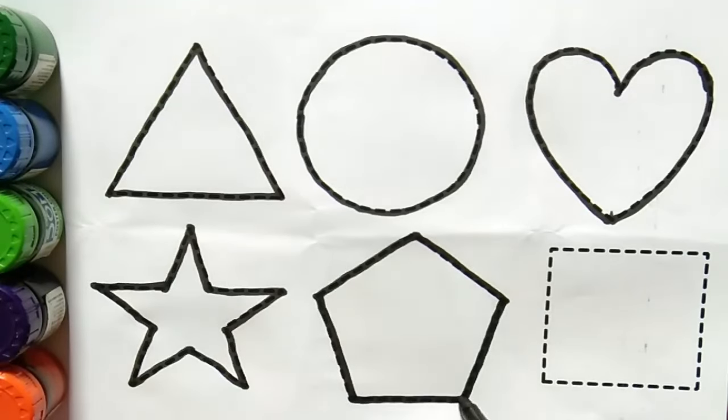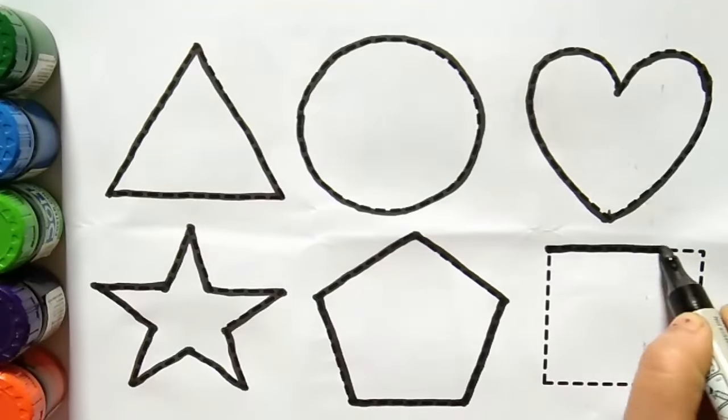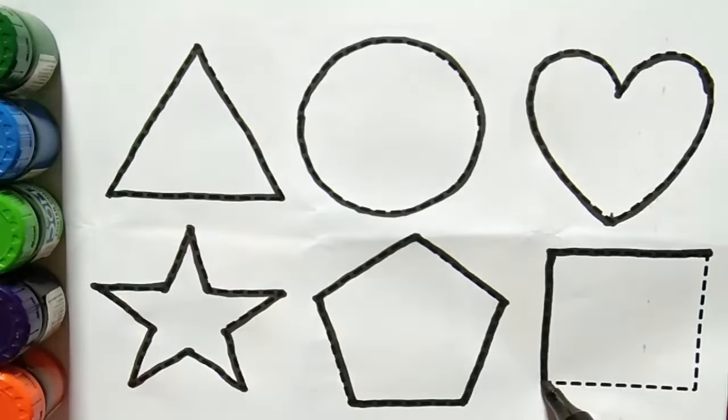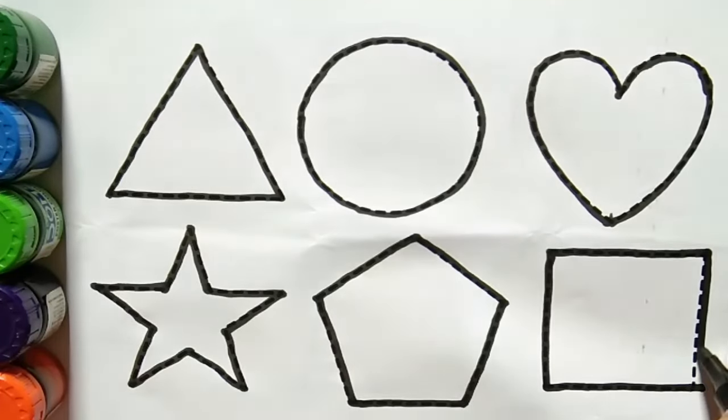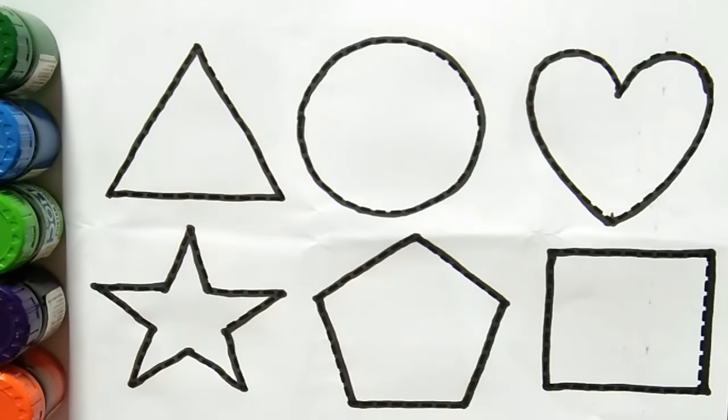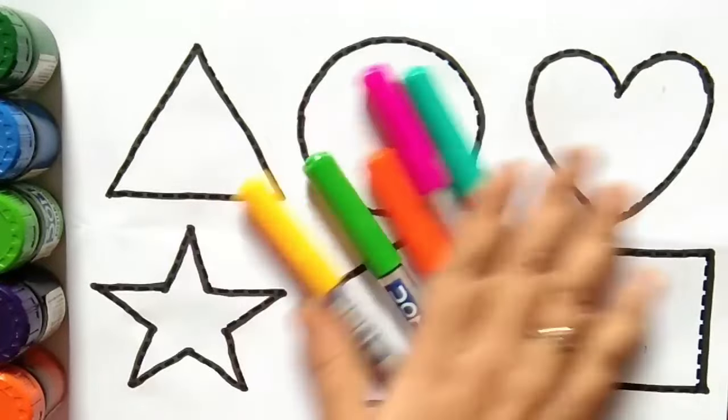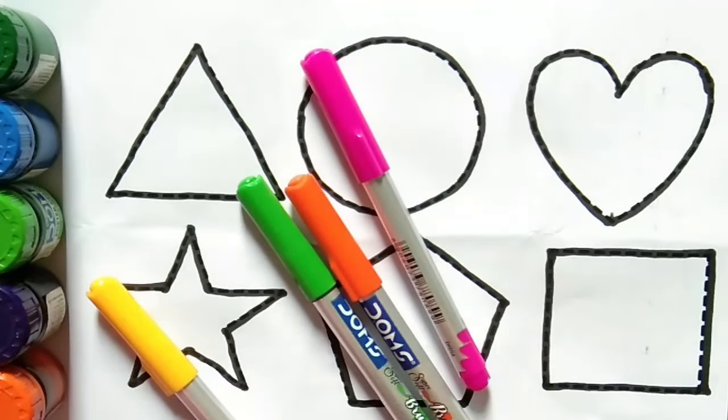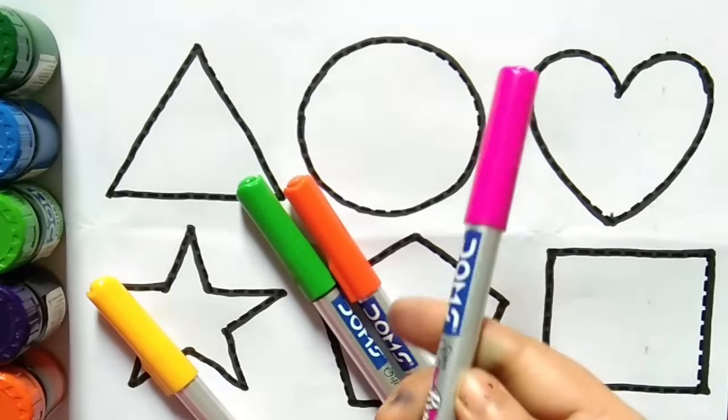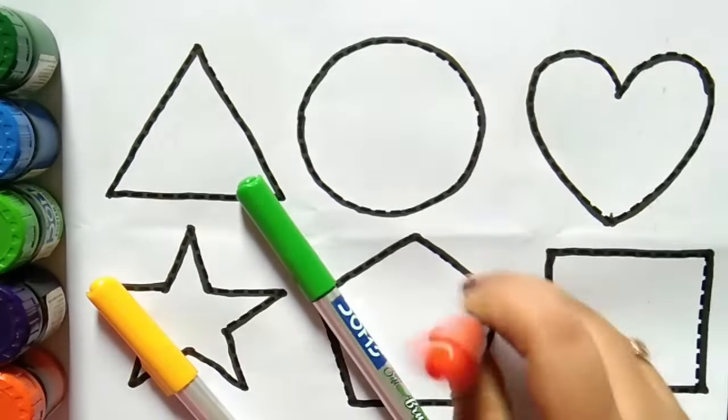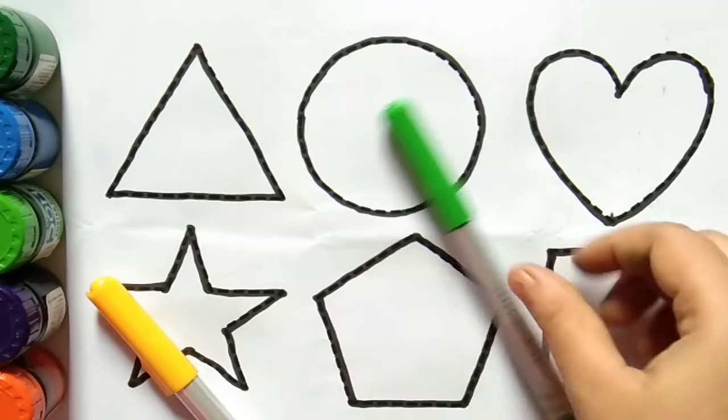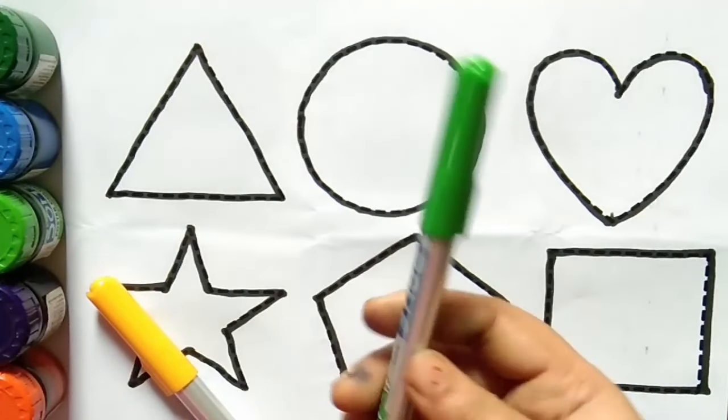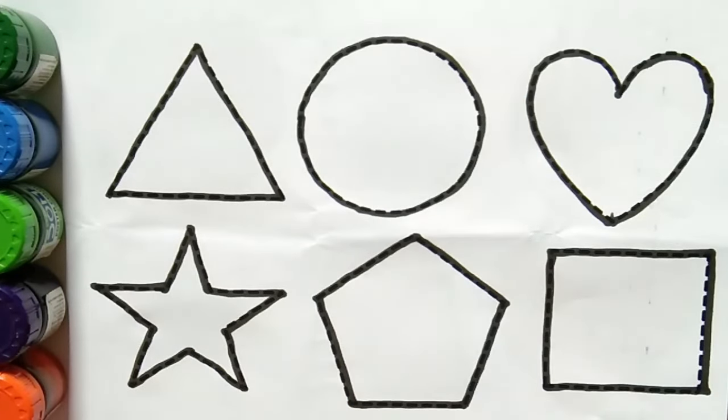Star, pentagon, square. Let's learn some color names: green color, pink color, orange color, light green color, yellow color.